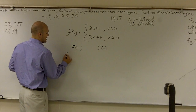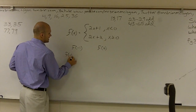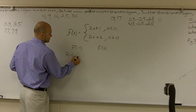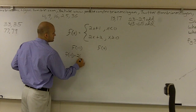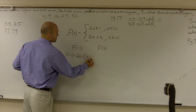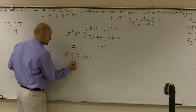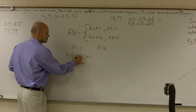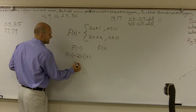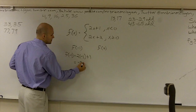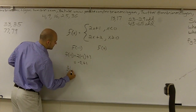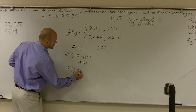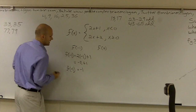So f of negative 1 equals 2 times negative 1 plus 1. 2 times negative 1 is negative 2, plus 1. So therefore, f of negative 1 is going to equal negative 1.